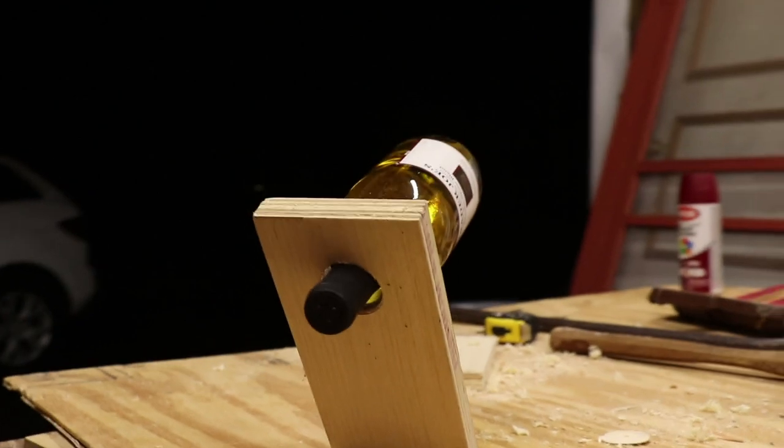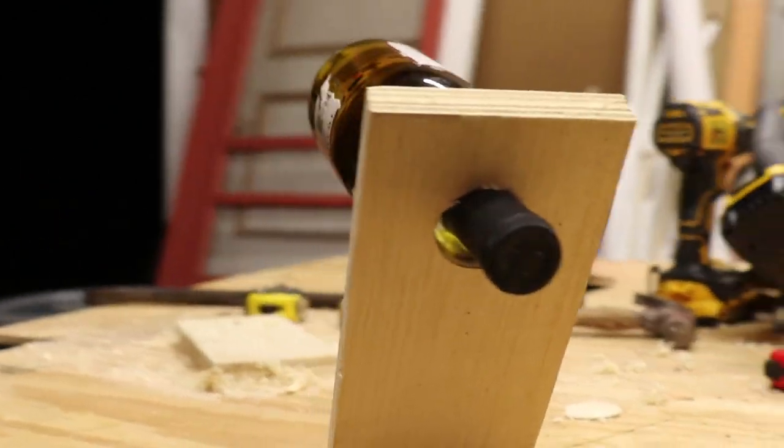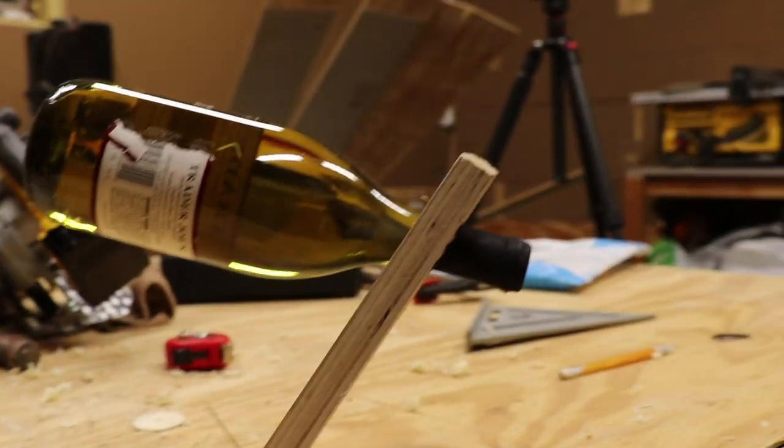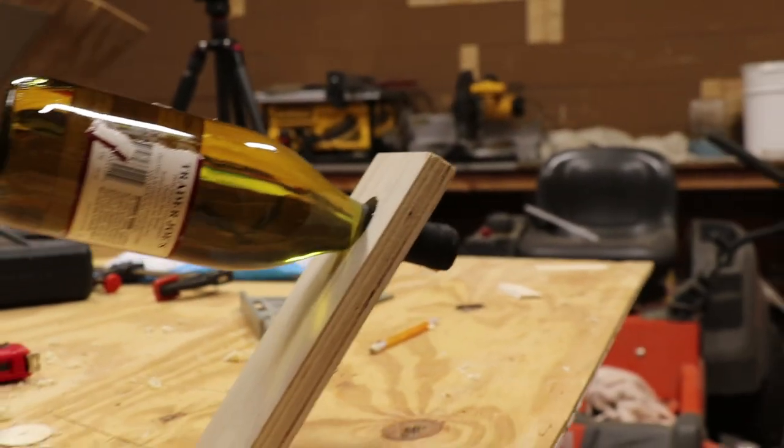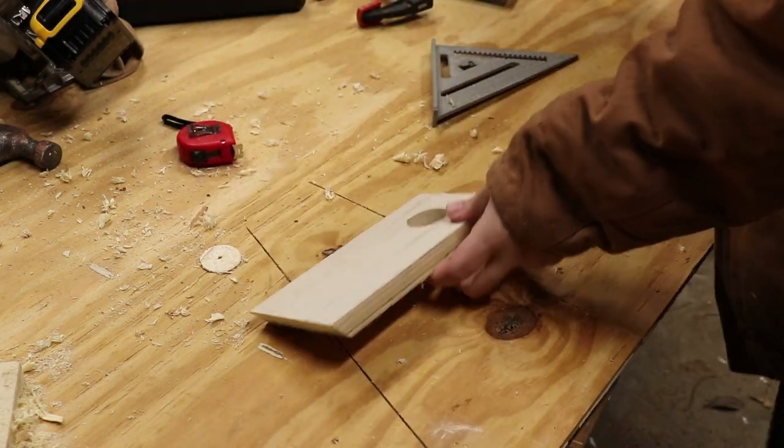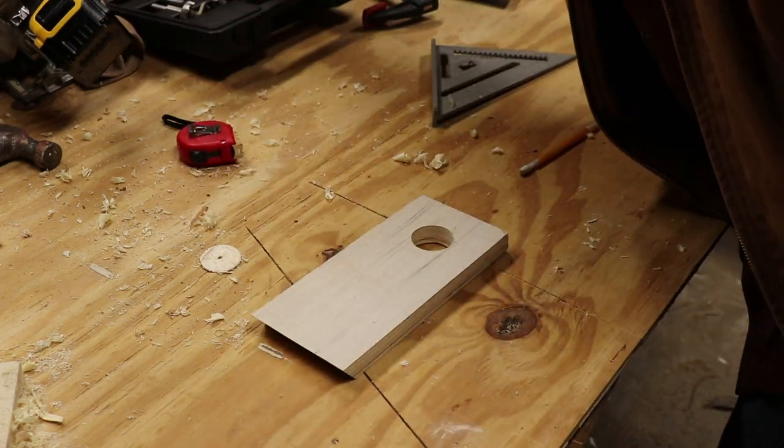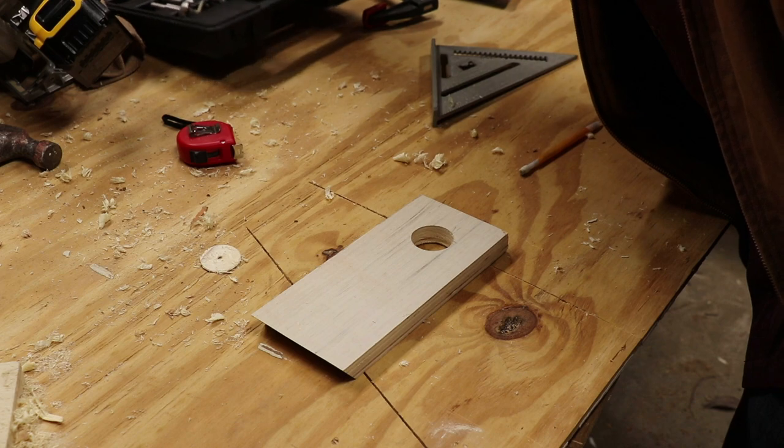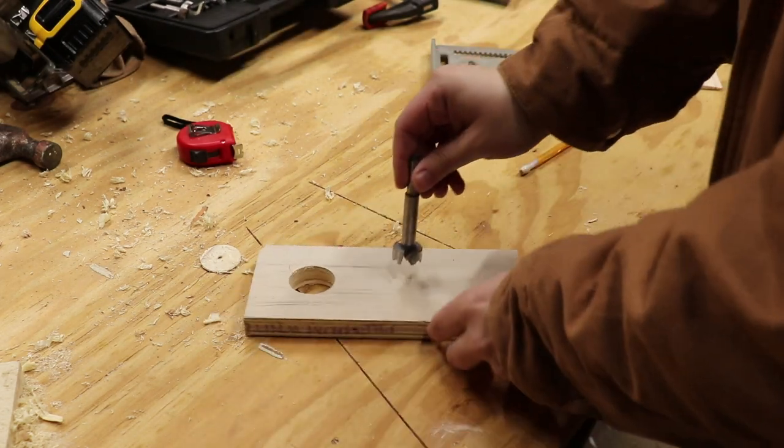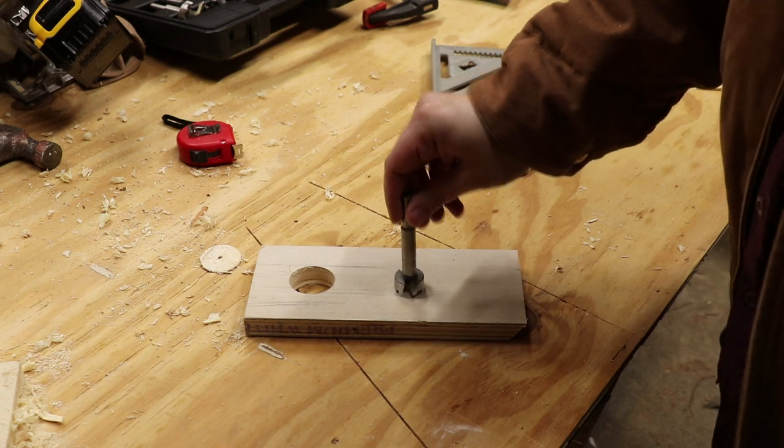So as you can see, it works just like it is, but I'm gonna see what I can do about making it a little bit more Valentine's-y. So to do that, I'm going to actually grab a smaller Forstner bit. This one looks like the seven-eighth inch Forstner bit, and I'm gonna make a little heart right here.